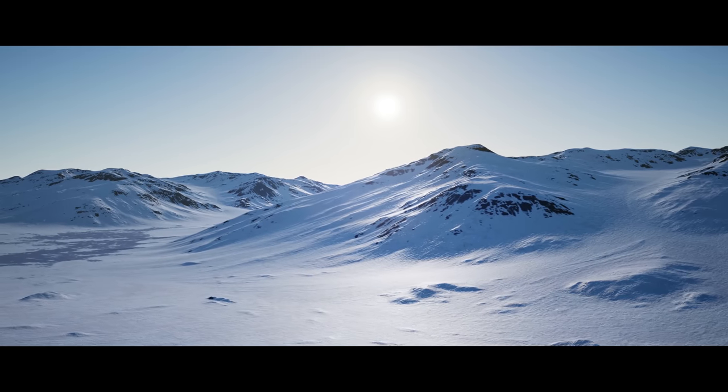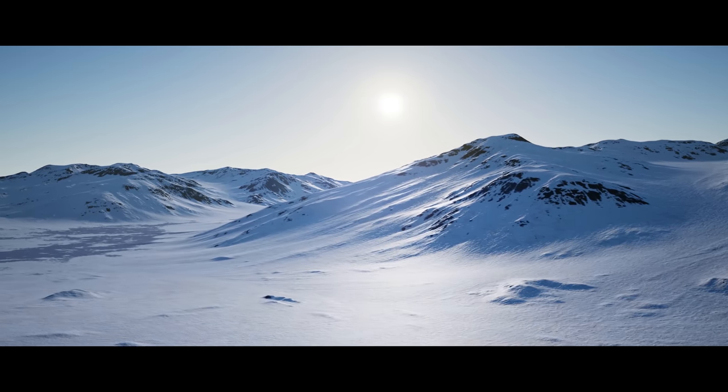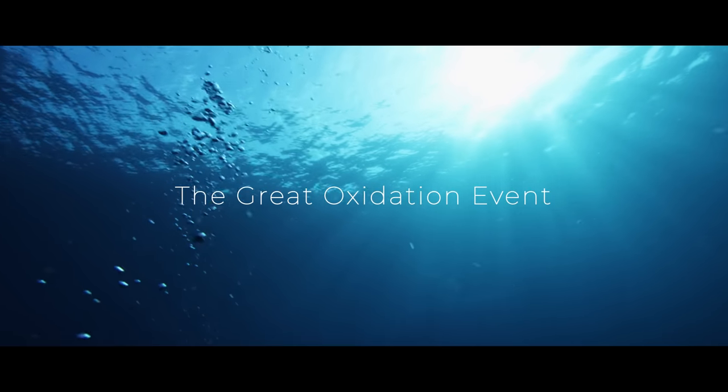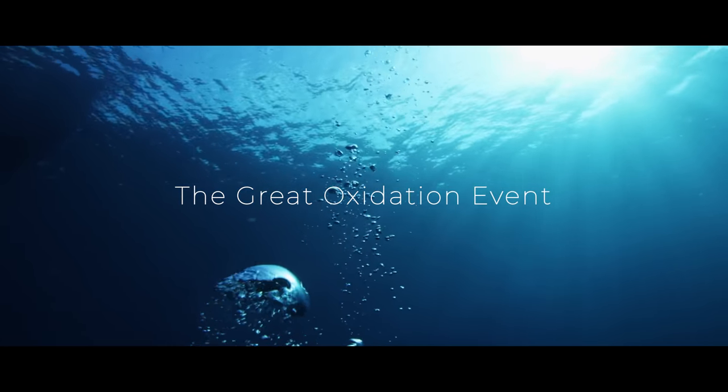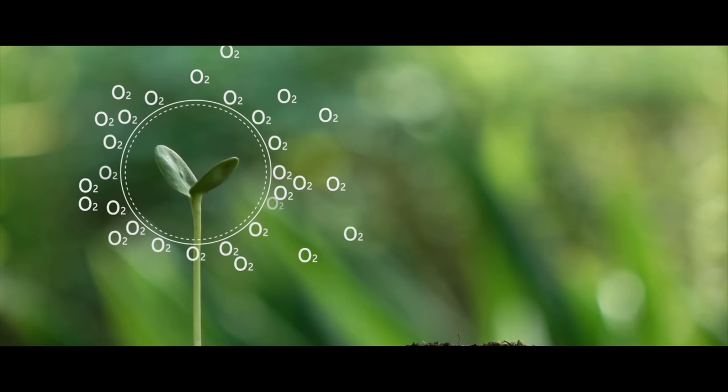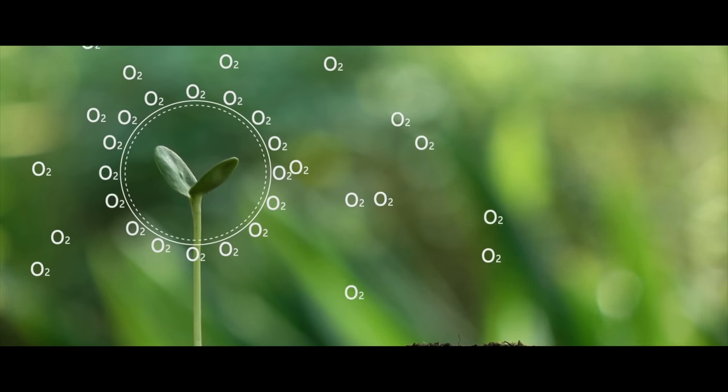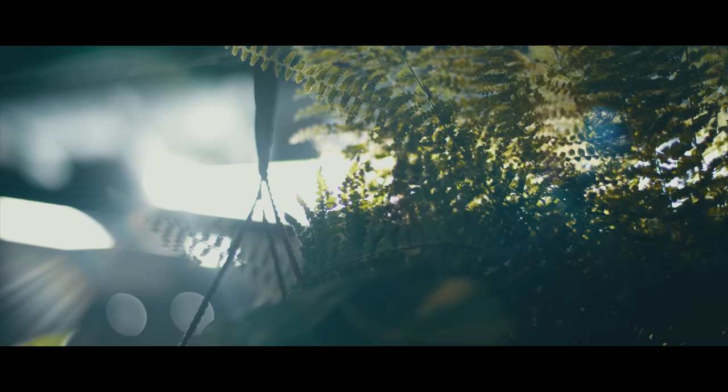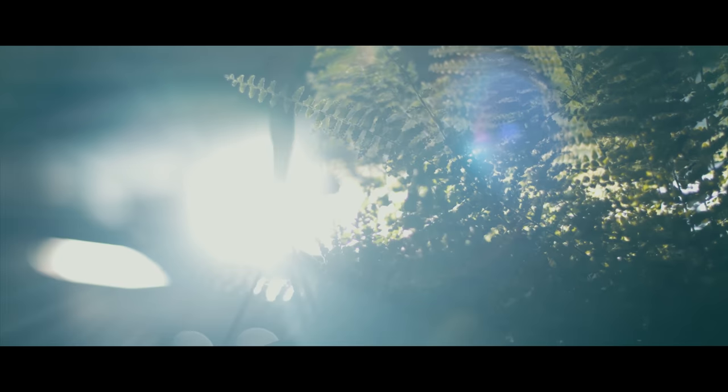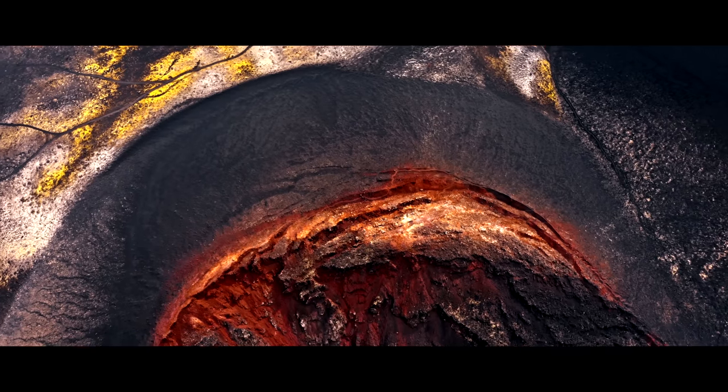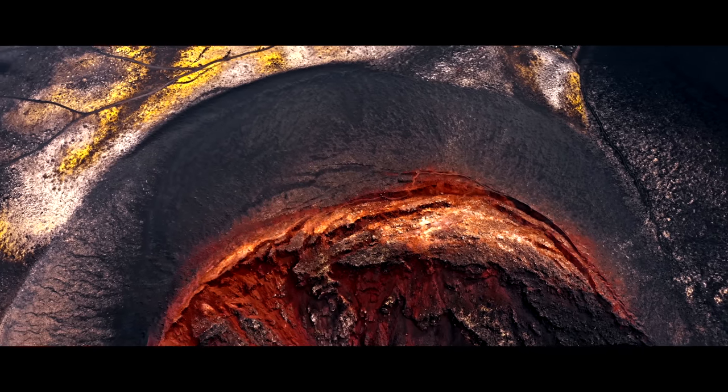The first mass extinction occurred approximately 2.4 billion years ago. This is called the Great Oxidation Event. Because the oxygen we inhale was produced by anaerobic organisms as a toxic byproduct of photosynthesis, and this oxygen accumulated in the atmosphere over time, a large part of the previously formed organisms could not cope with it and died out or withdrew into oxygen-free niches.